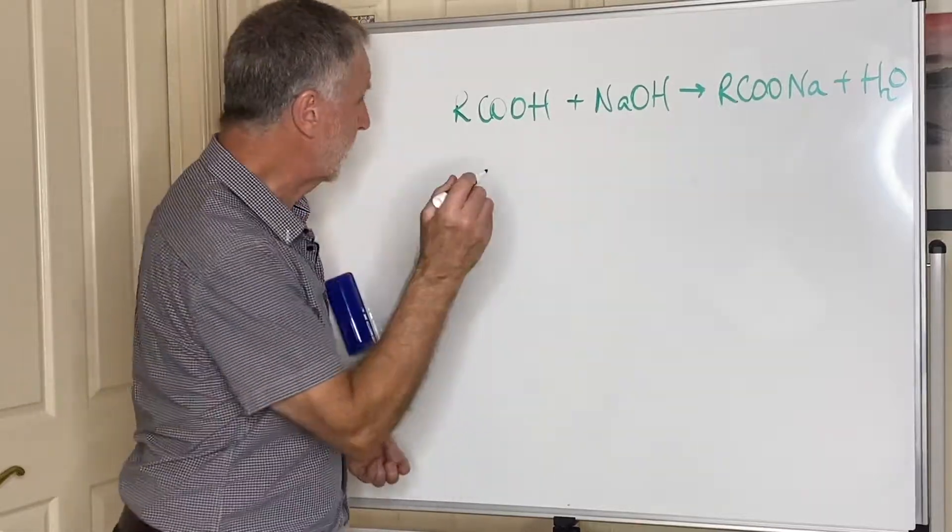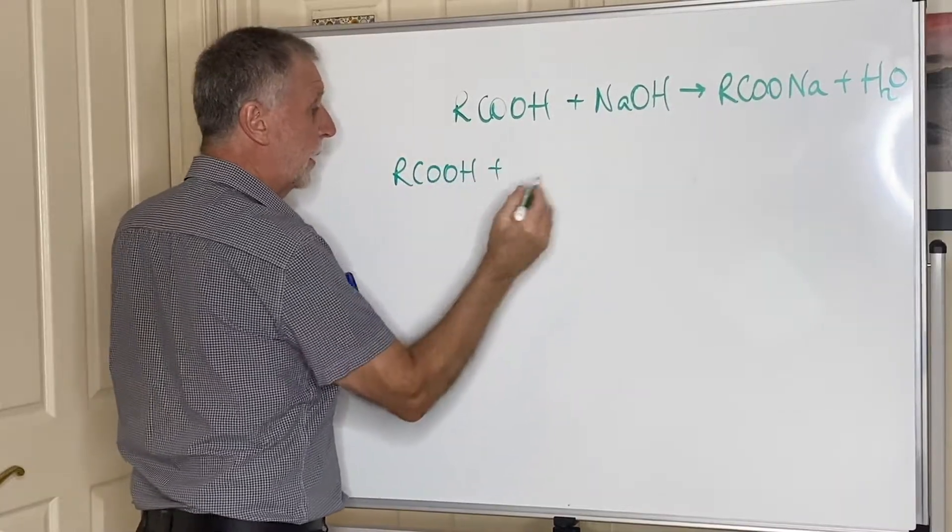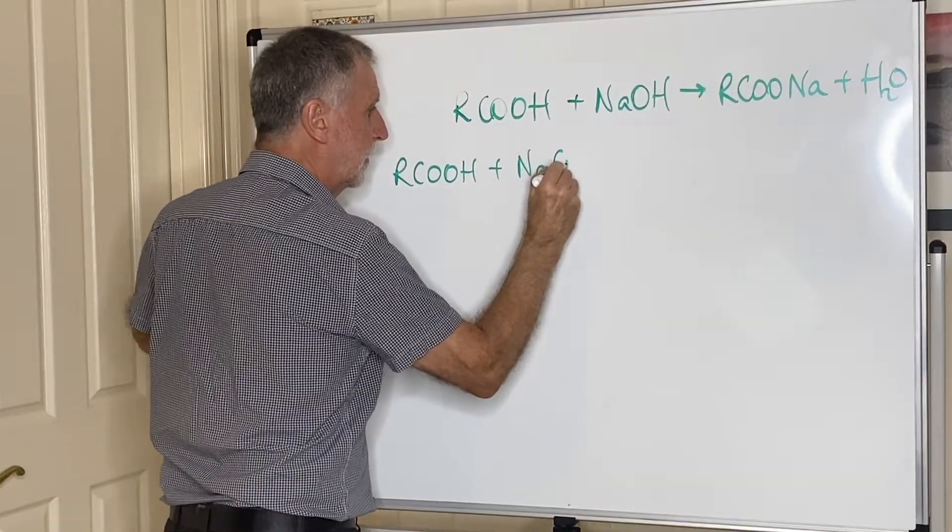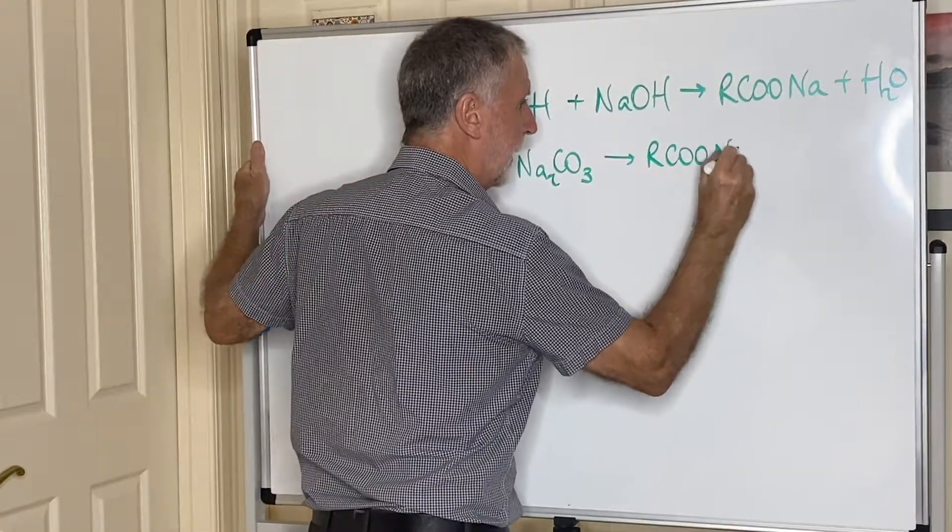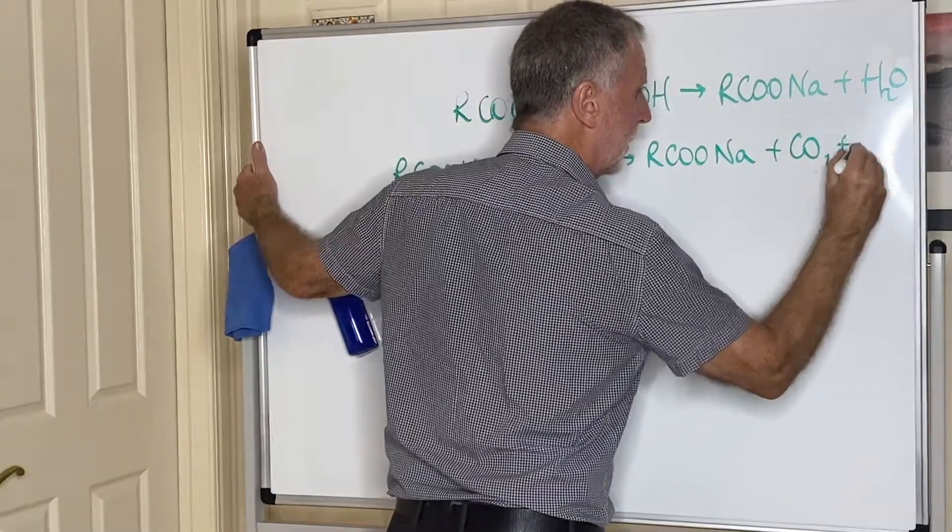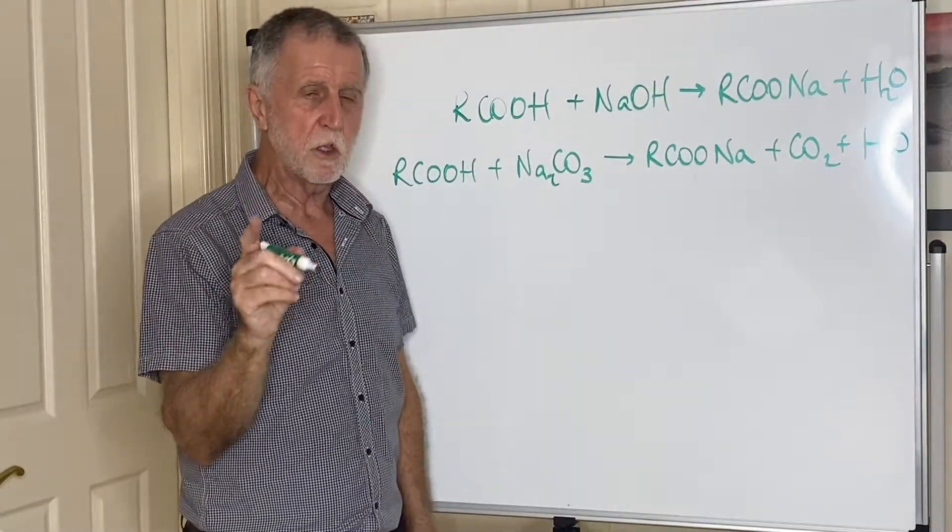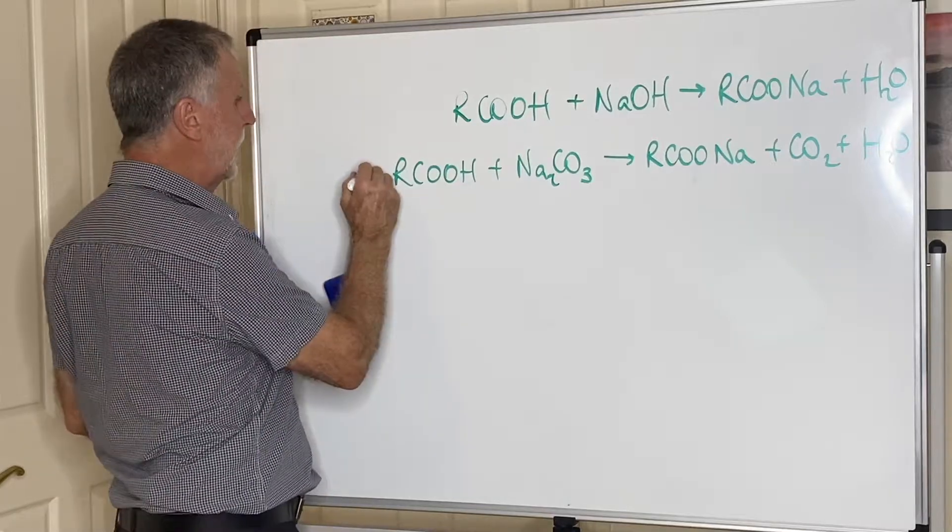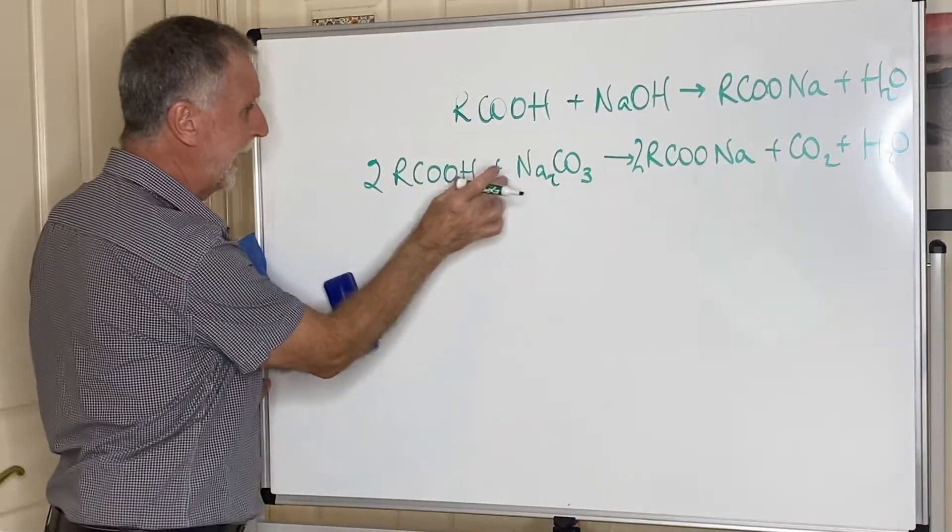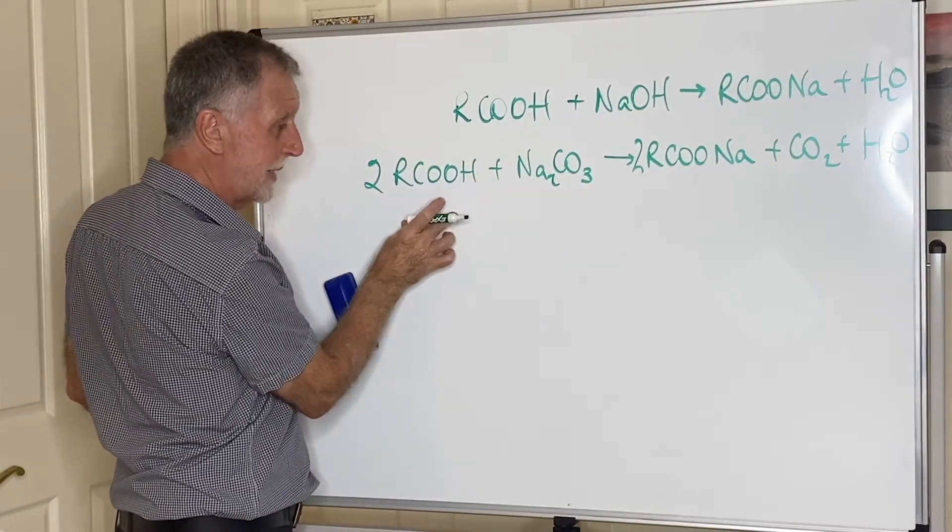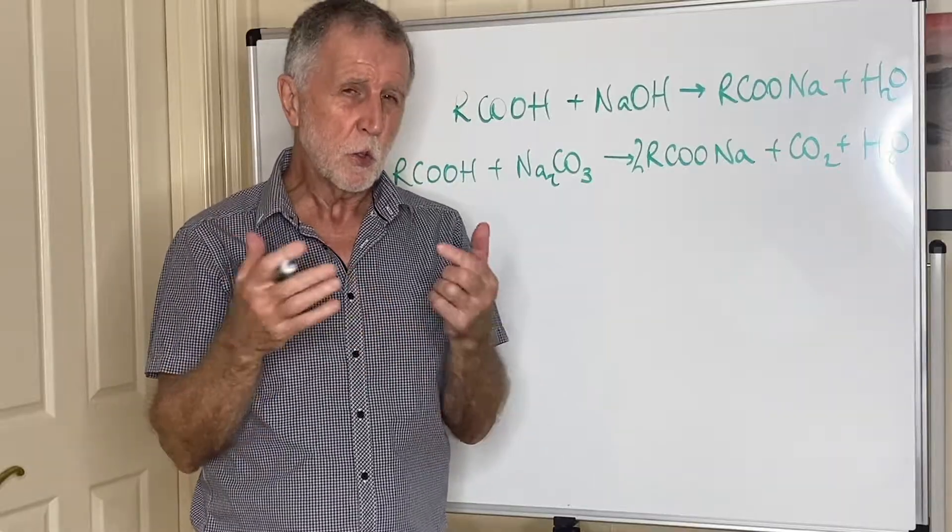They also undergo a reaction, again they're acids so if you react them with a carbonate like say sodium carbonate, then again they will form the salt RCOONa plus carbon dioxide plus water. That's not specifically mentioned in the syllabus but there was a question on it in an exam so I mentioned it to you. The reason I'm saying it is basically because when you add sodium carbonate to a carboxylic acid, then the fact it produces carbon dioxide means you see fizzing and therefore it's a good way of showing that an acid is present.